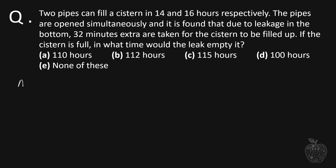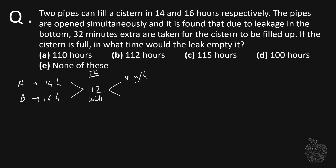There are two pipes, let's call them A and B, and they can fill the cistern in 14 and 16 hours respectively. Let's take the LCM of 16 and 14, which is 112. Let's say 112 is the total capacity of the tank. A can fill 112 divided by 14, which is 8 units per hour. Similarly, B fills 112 divided by 16, which is 7 units per hour.